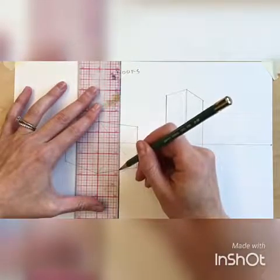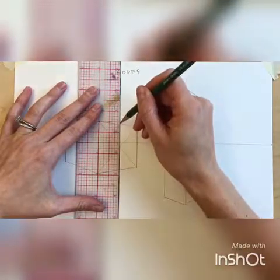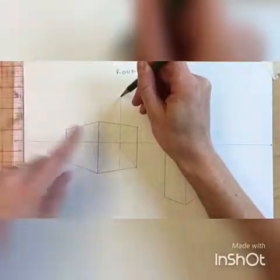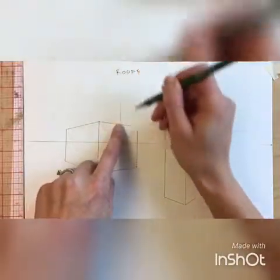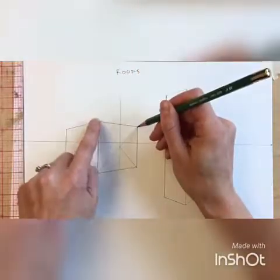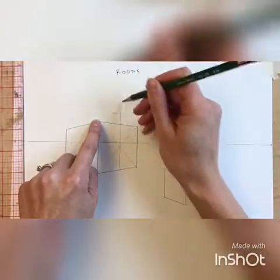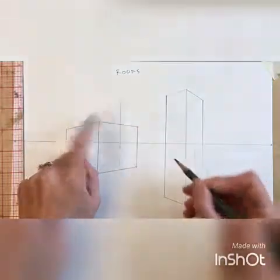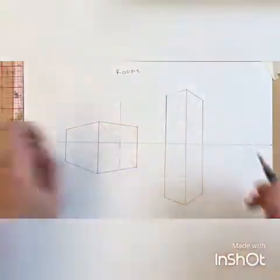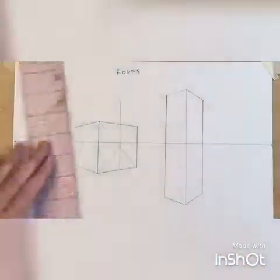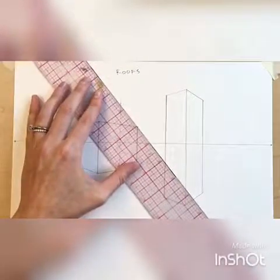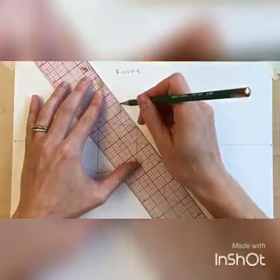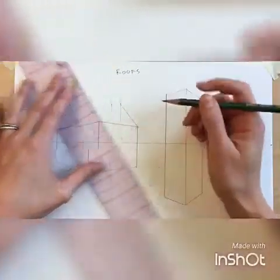I'm going to draw a vertical line through the middle here and draw it as tall as I want it off of the top of this box — that's going to be the height of the roof. That's a little bit tall so I'm going to put the height right about there, and then I'm going to simply connect that point to both corners of the wall.